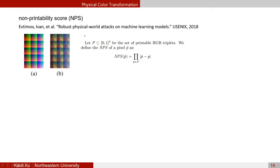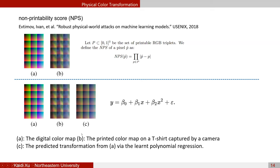Besides shape transformation, color change is also significant. Prior work used a non-printability score (NPS), manually sampling around 30 colors by calculating differences between digital and printed colors in the color map. In our approach, we learn a polynomial regression from digital color map A to printed color map B, and our learned result is shown in C. Because our method is fully differentiable and pluggable into the objective function, it acts as a soft constraint and is more friendly to building adversarial examples than NPS. We also add brightness, contrast, random noise, and blurring augmentations.